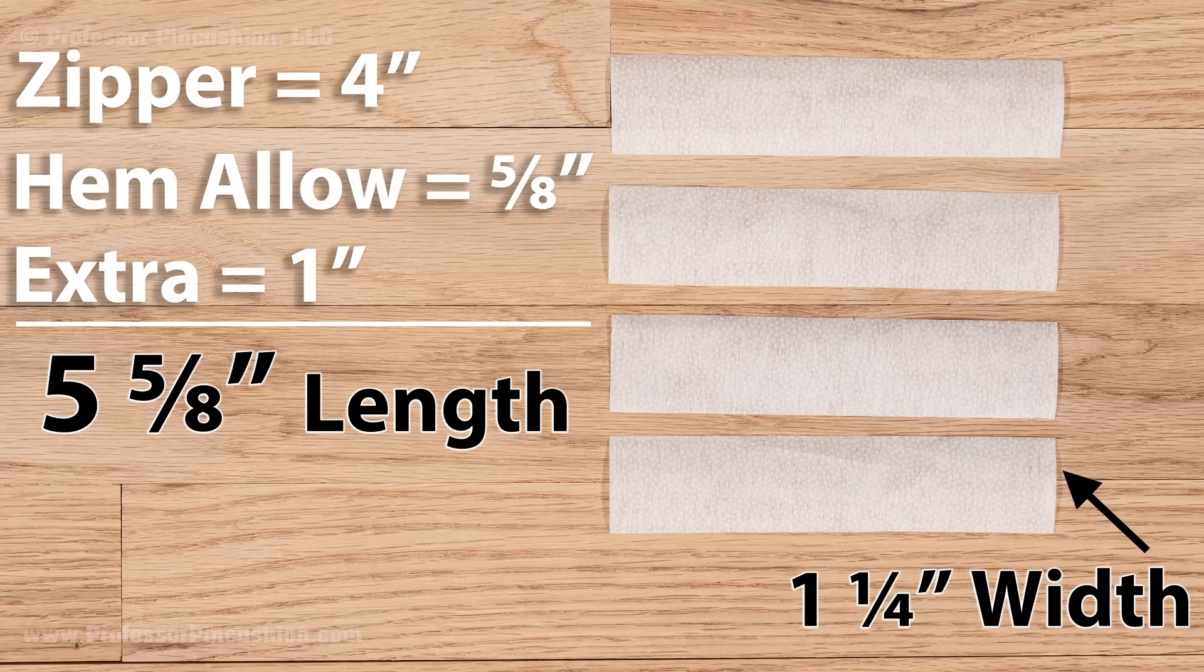Decide how much of the zipper you want to see, measuring out from the center of the zipper teeth. For example, I want to see the teeth in some of the zipper tape so I will write down one quarter inch. Add this written down amount to your seam allowance.